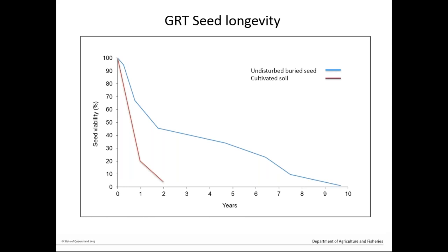The red line shows that you can reduce the seed bank quite quickly in a two or three year period through just cultivating soil. So there may be options to do some cultivation, do something else for a number of years and then move back into a suitable pasture species after that. But you still have to control seedling germination and establishment during that two-year period, so that can be a bit challenging as well.